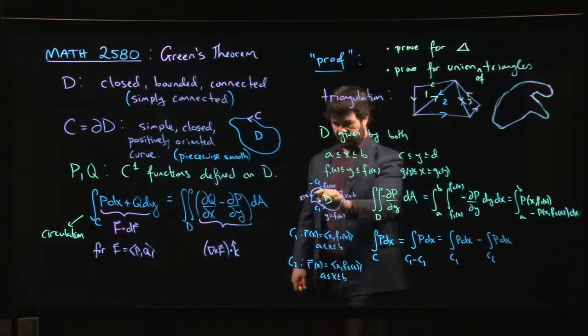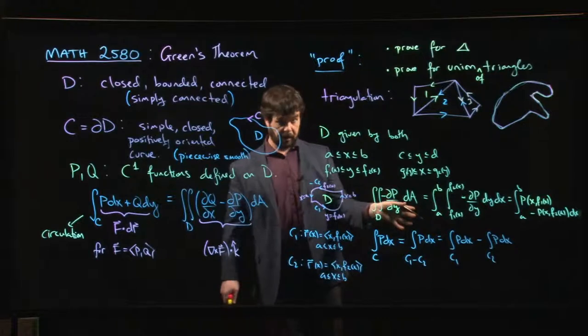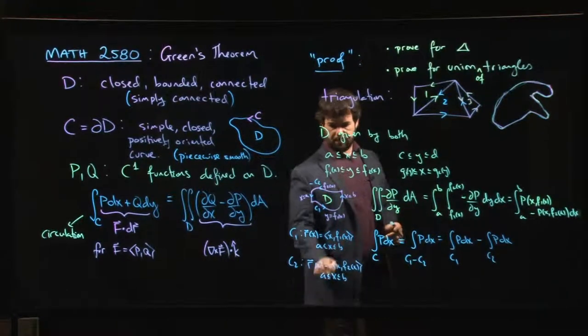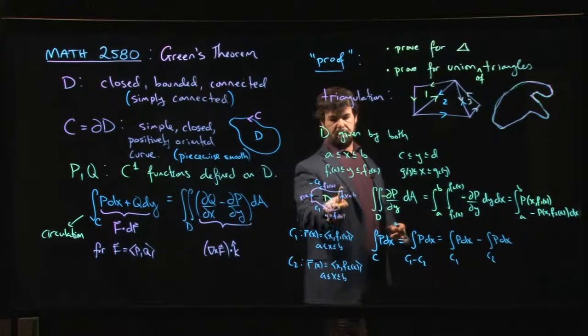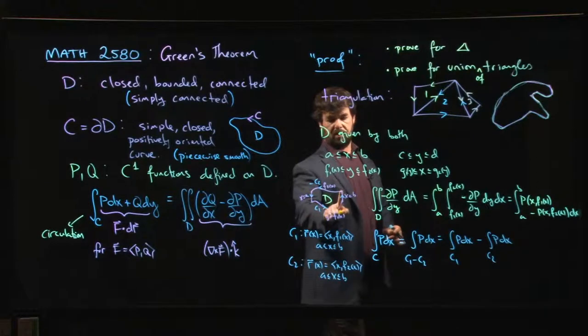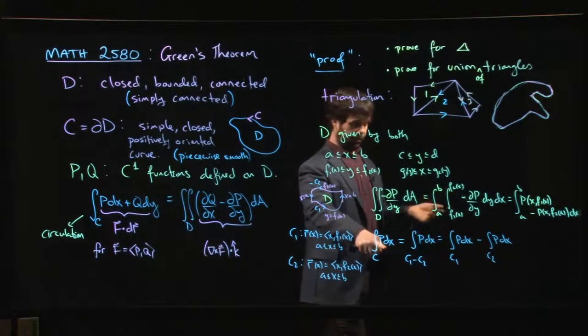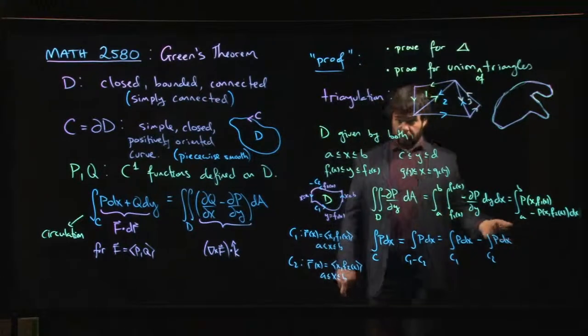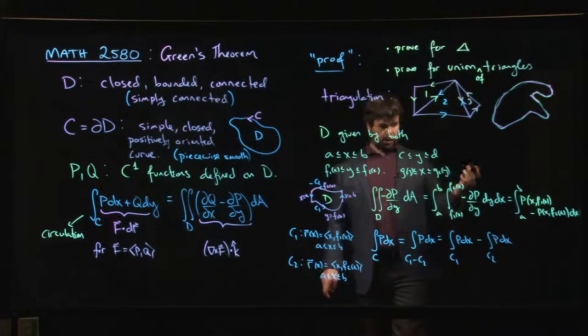And you might be wondering, hey, what about the other sides, right? What about this side? What about that side? Why didn't I include those? Well, any part of your boundary that is a vertical line is one where x is held constant, so it's one where dx is zero. So those don't contribute to the integral, okay?